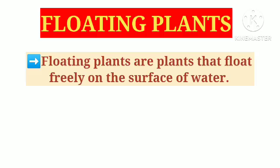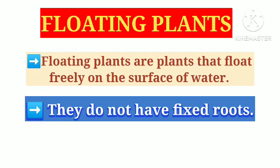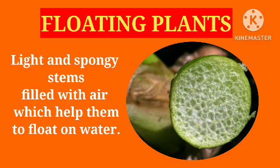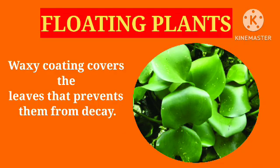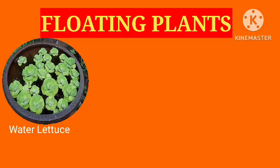Floating plants are plants that float freely on the surface of water. They do not have fixed roots and thus are not attached to the bottom of the water body. These plants have light and spongy stems filled with air which help them to float on water. A waxy coating covers the leaves that prevents them from decay.